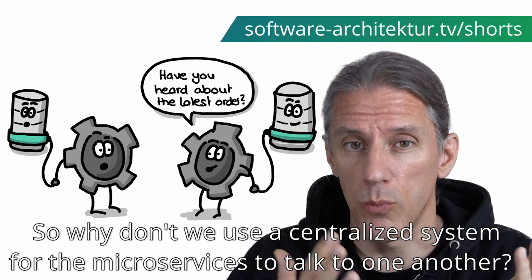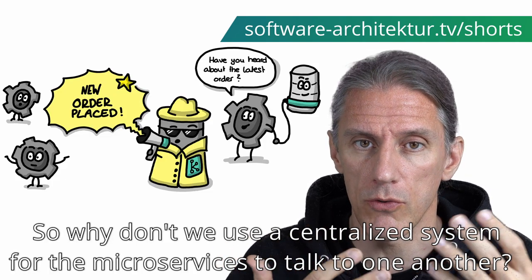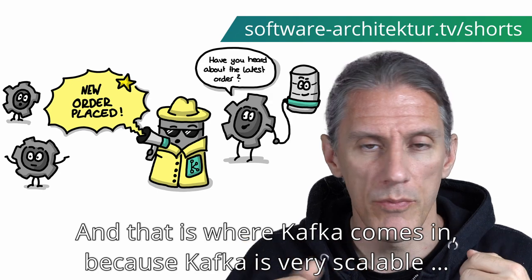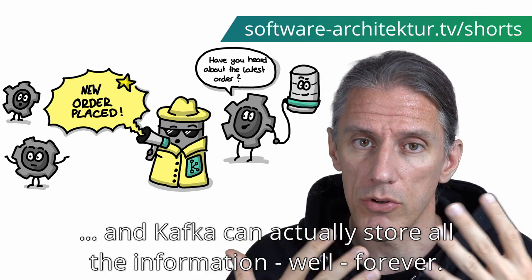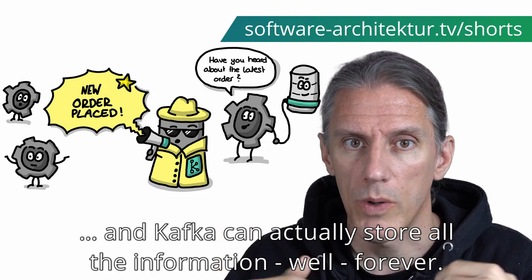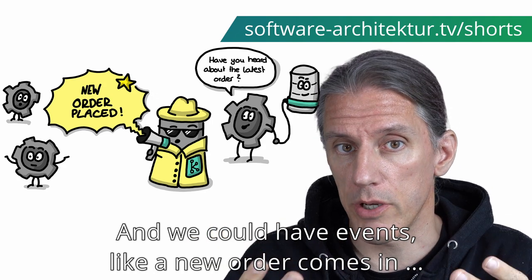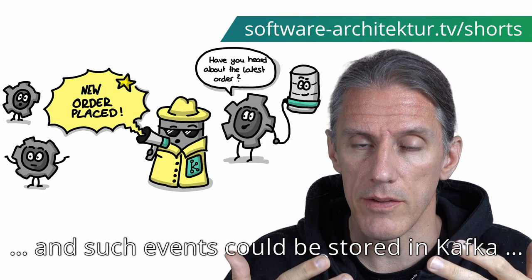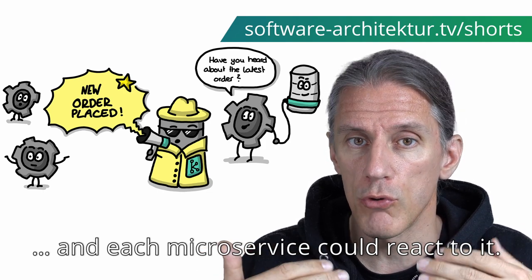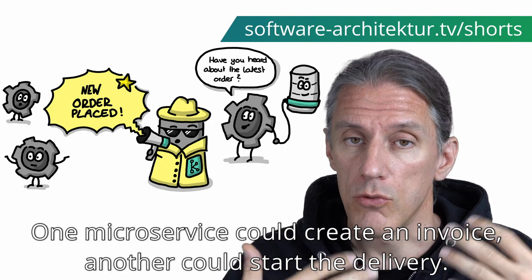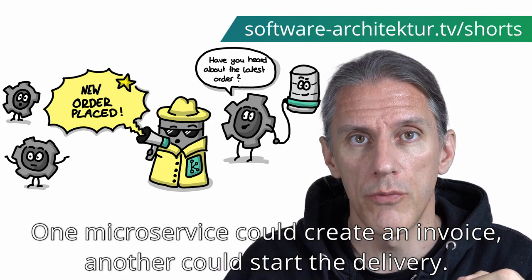That looks like a lot of chaos. So why don't we use a centralized system for the microservices to talk to one another? And that is where Kafka comes in, because Kafka is very scalable and Kafka can actually store all the information forever. We could have events like a new order comes in, and such events could be stored in Kafka and each microservice could react to it — one microservice could create an invoice, another one could start the delivery.